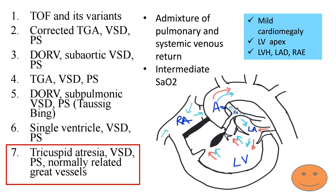Just like single ventricle, cardiomegaly is mild in tricuspid atresia VSD+PS. The apex is LV because the RV is rudimentary. ECG shows LVH, left axis deviation, a counterclockwise loop, and right atrial enlargement — the RA enlarges because blood cannot enter the RV and must compensate by enlarging to force flow across the ASD.